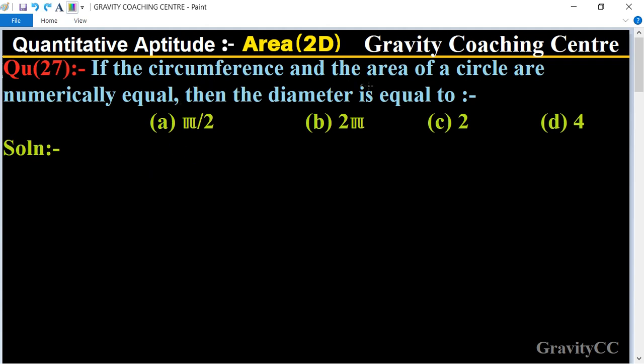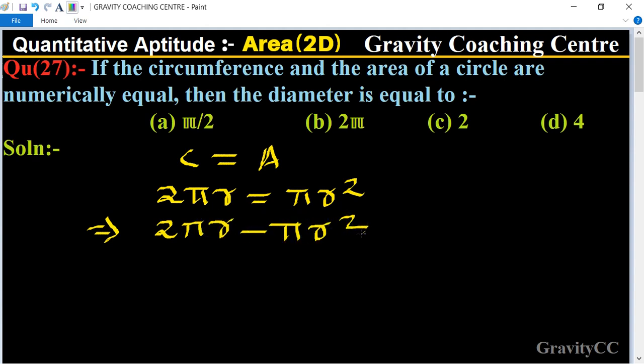So circumference equals area. The formula of circumference is 2πr equals πr². This implies that 2πr minus πr² equals 0.